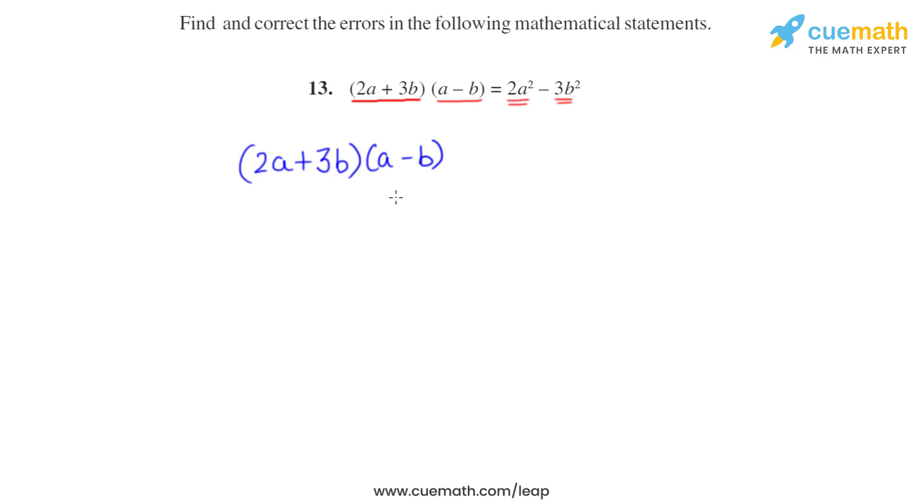We have to multiply these two brackets. To multiply, we multiply 2a with both the terms of the second bracket, then we multiply 3b with both the terms of the second bracket. This is the way - we multiply all the terms of the first bracket with all the terms of the second bracket.